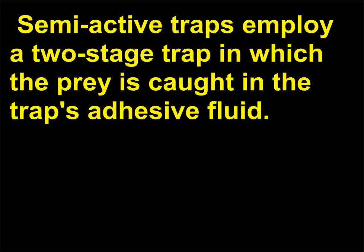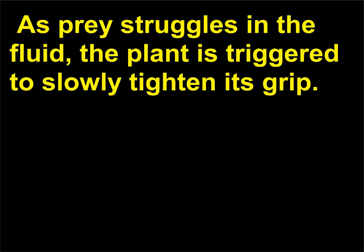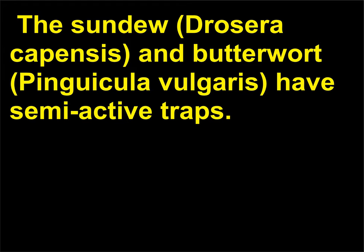Semi-active traps employ a two-stage trap in which the prey is caught in the trap's adhesive fluid. As prey struggles in the fluid, the plant is triggered to slowly tighten its grip. The Sundew (Drosera capensis) and Butterwort (Pinguicula vulgaris) have semi-active traps.